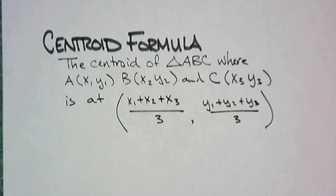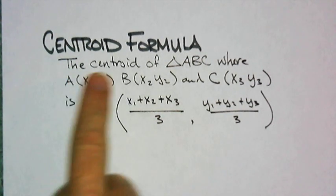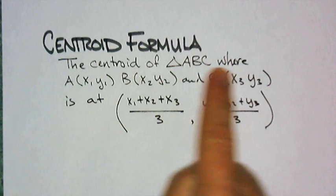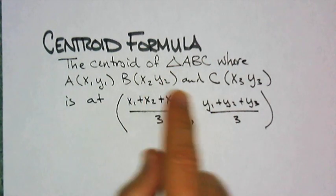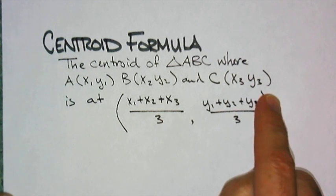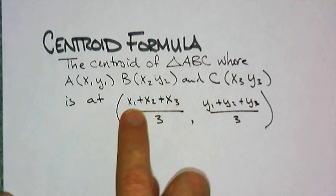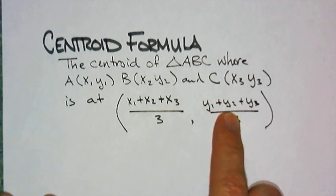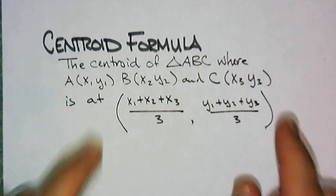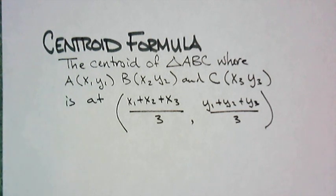All right. We have covered a lot today. But one of the things that you've got to remember is the centroid formula. So let's write it out. The centroid formula, the centroid of a triangle ABC, where A is at x1, y1, B, x2, y2, and C, x3, y3, is at x1 plus x2 plus x3 divided by 3, comma, y1 plus y2 plus y3 divided by 3. And so it's otherwise known as the average of all the x's and then the average of all the y's. Right?